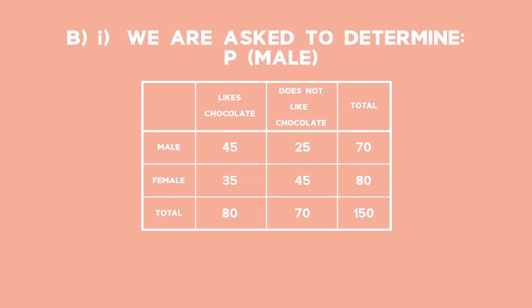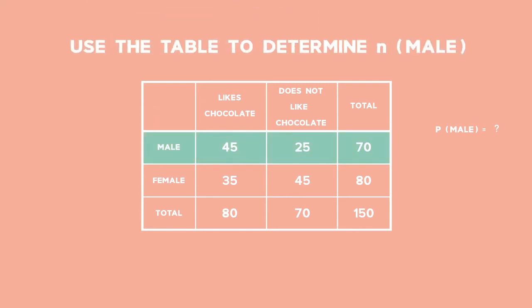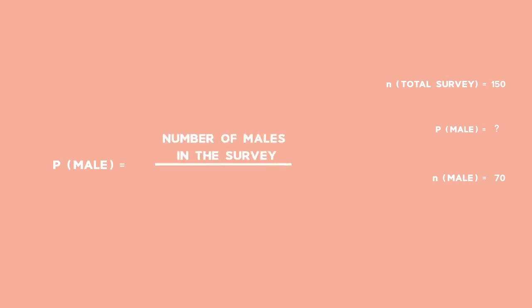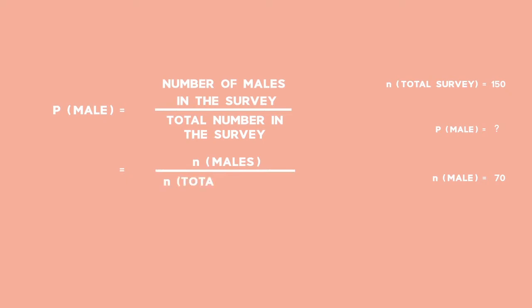In B1, we are asked to determine the probability that if we randomly select one of the people surveyed, they will be male. To determine the probability, we first have to find the total number of males in the survey. Use the table to determine n of males by looking at the total of the highlighted horizontal row. 45 plus 25 is equal to 70, so n of males is equal to 70. We use the formula: P(male) = number of males in the survey divided by total number in the survey = 70 divided by 150, which equals 7 over 15, or 46.7%.